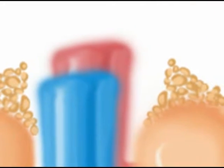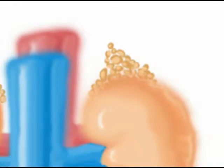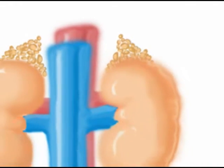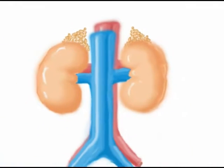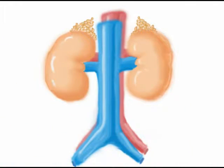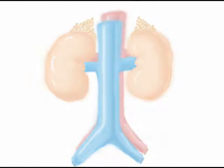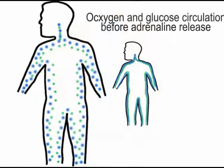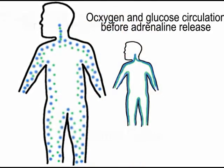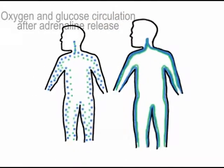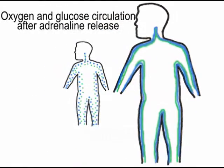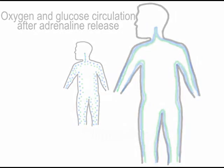Adrenaline is a hormone that is released in your body by the adrenal glands when you encounter high stress or physically exhilarating situations. When adrenaline is released into your bloodstream, it stimulates more oxygen and glucose to be pumped throughout your body.